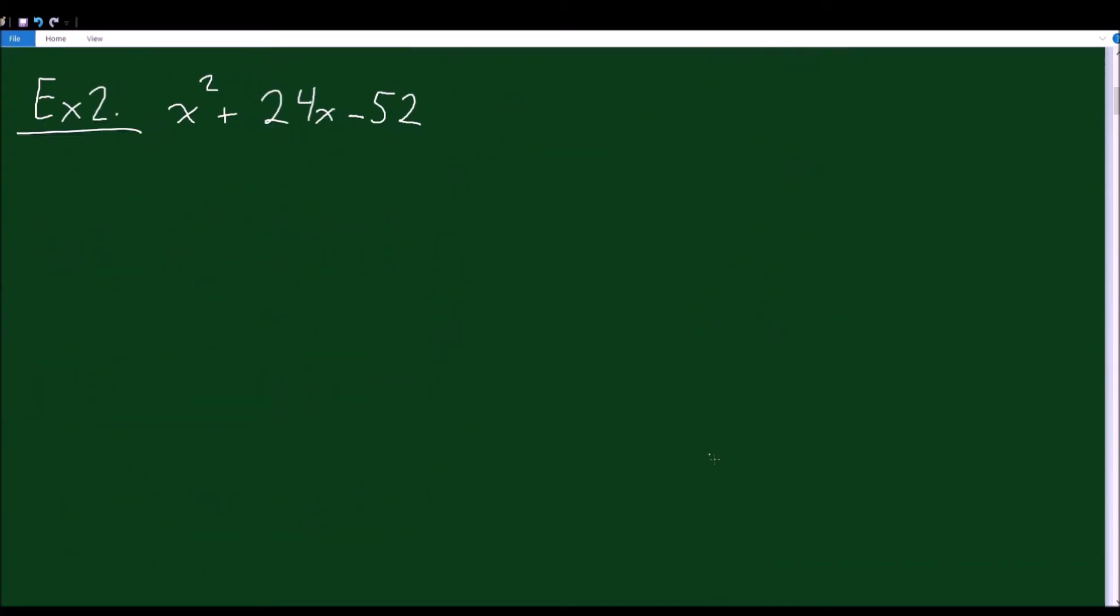So let's try another example. See how we do with this one. x² + 24x - 52. So again, two numbers that multiply to -52 and add to 24. And we have to include that minus in here. When we say what multiplies to this, it's what multiplies to -52, not just 52.